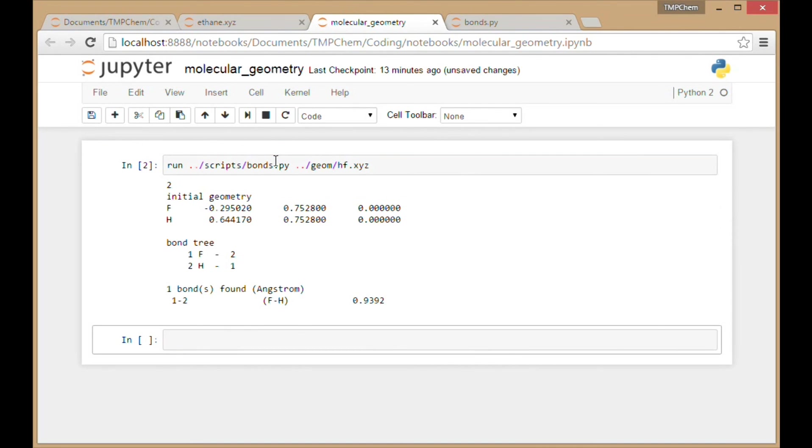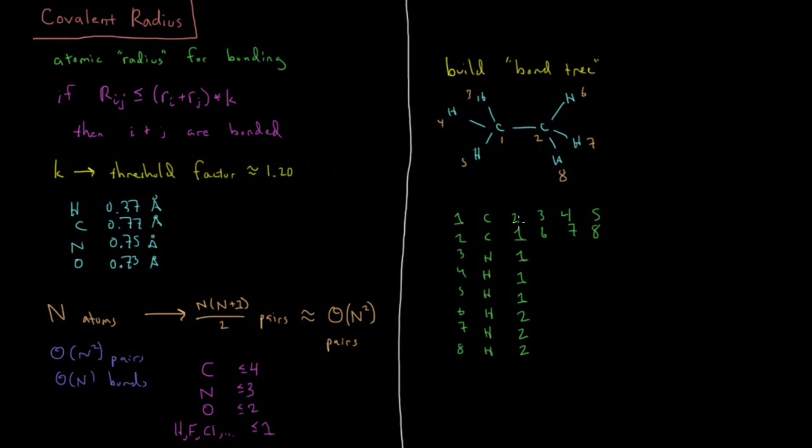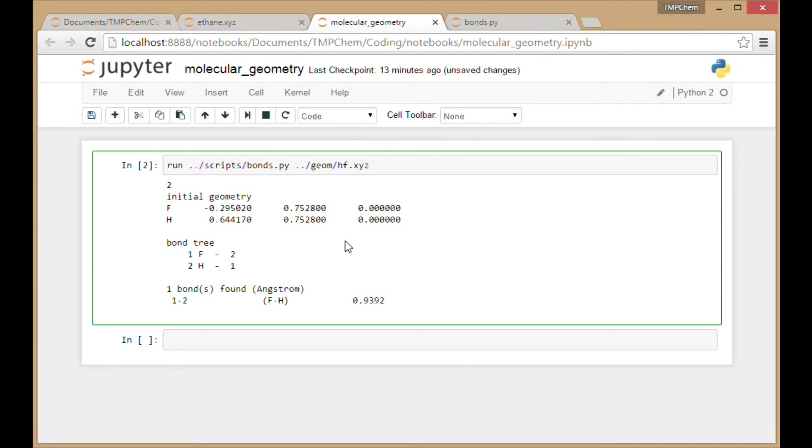Let's execute this program for the HF. Let's see if it results in the same type of results that I wrote down on the board. I believe I called that ethane.xyz. Shift enter to execute that.